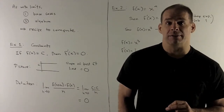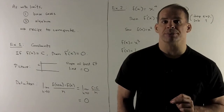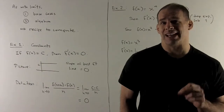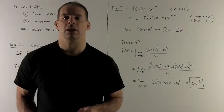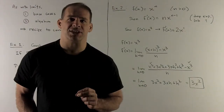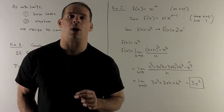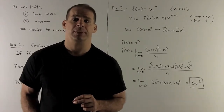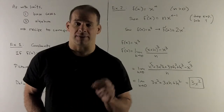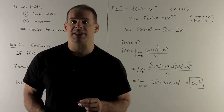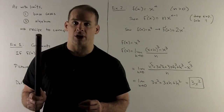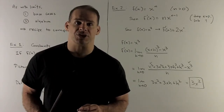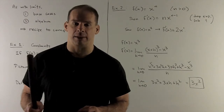That's it for constant functions. Note that our answer here didn't depend on x — that's usually not going to be the case. Now let's look at f of x equal to x to a power, where our power is a positive integer. The rule is: if I have x to the n, that n comes down, and then we take our exponent and subtract one. So the derivative of x to the n is going to be n times x to the n minus one.